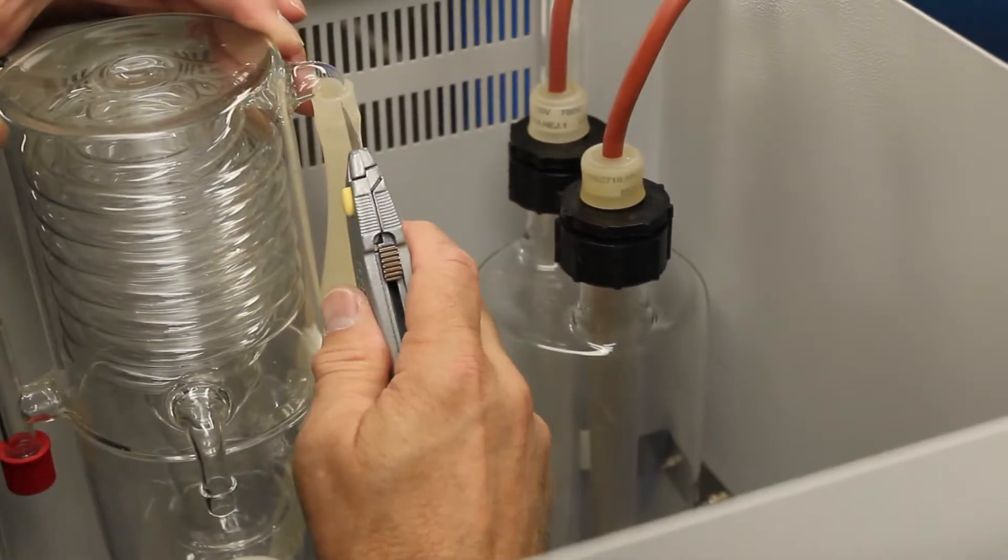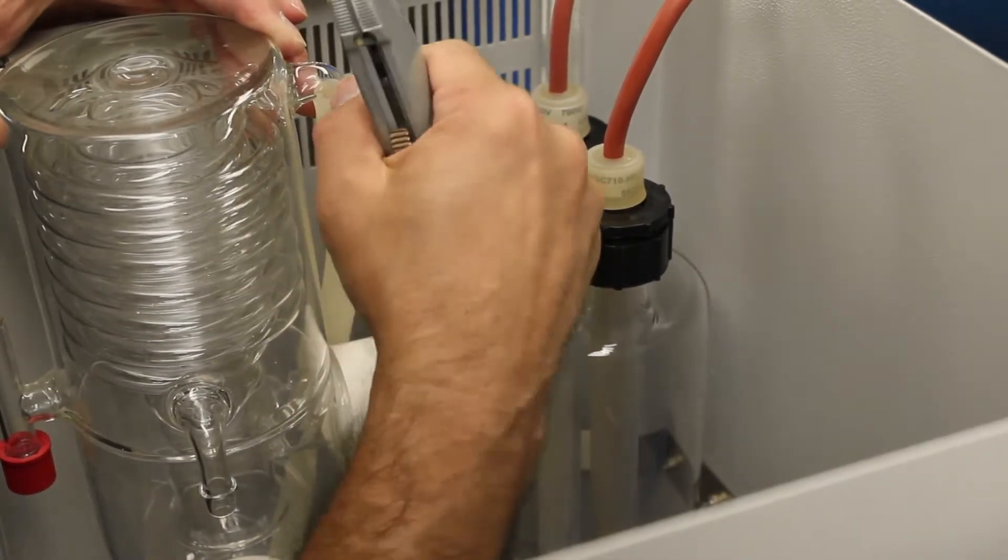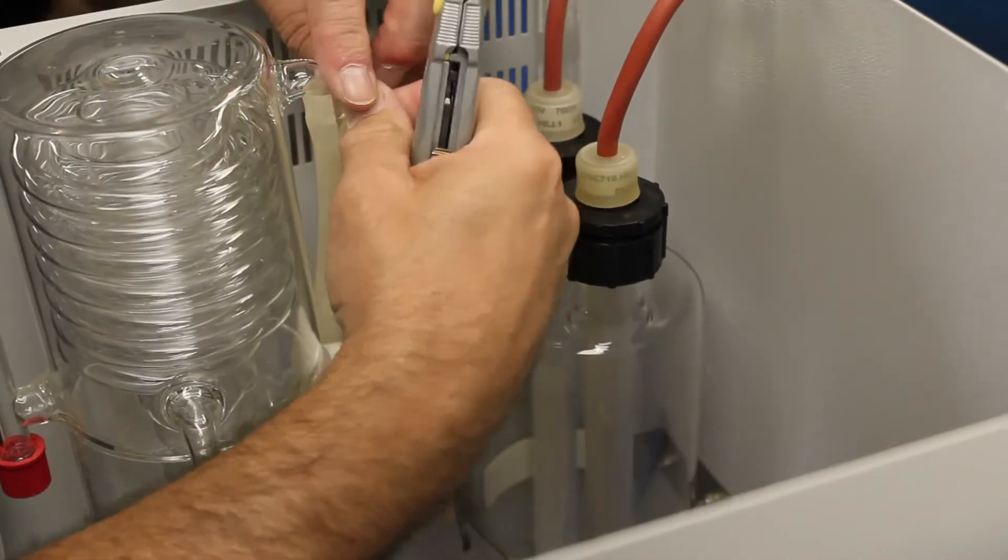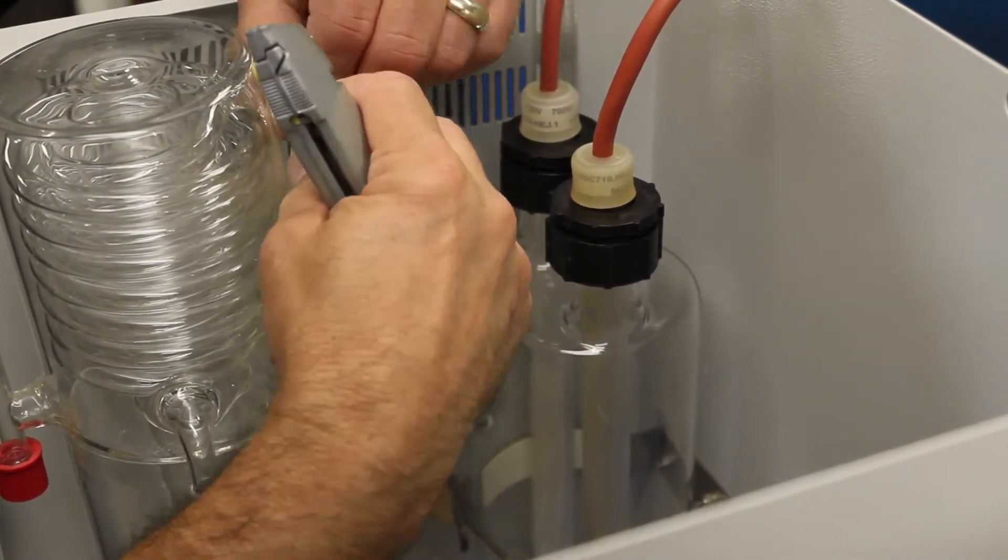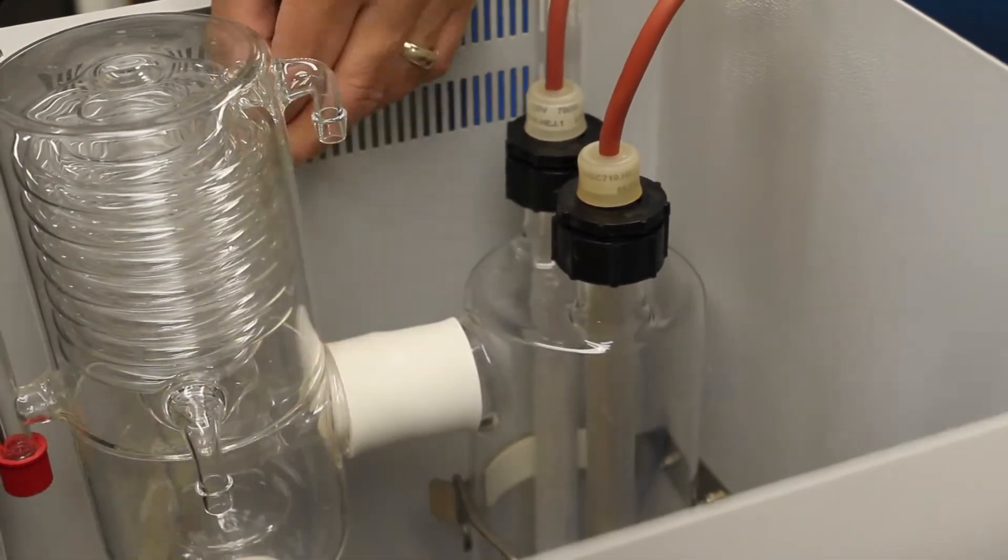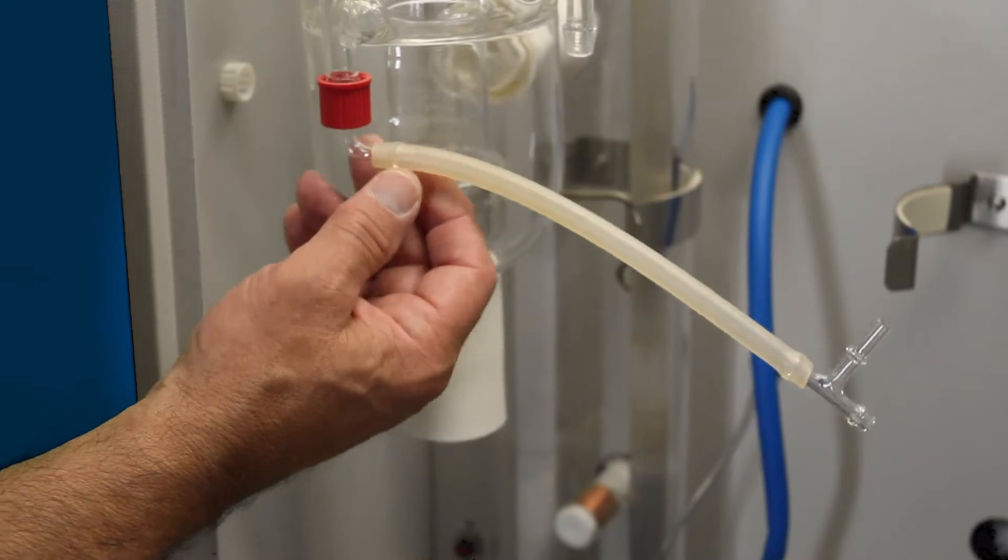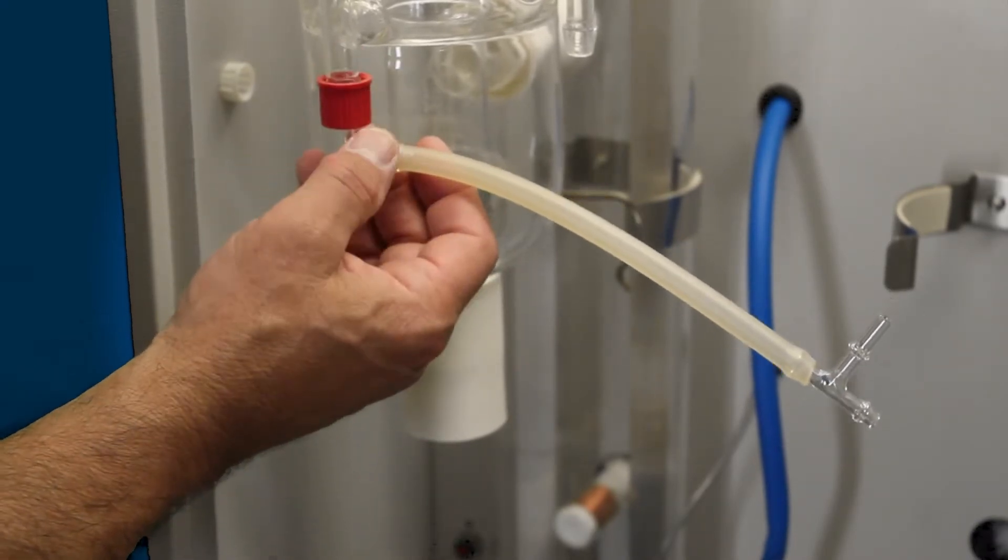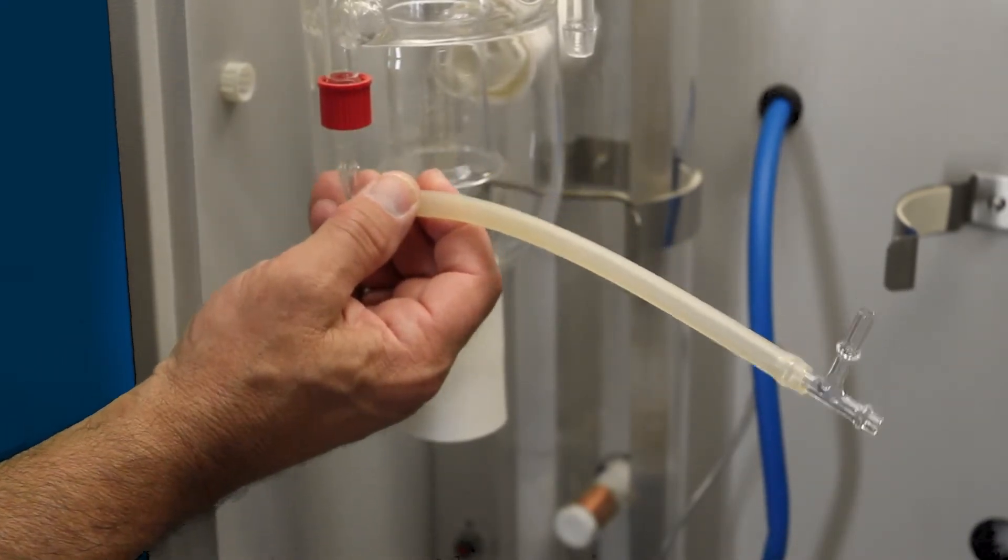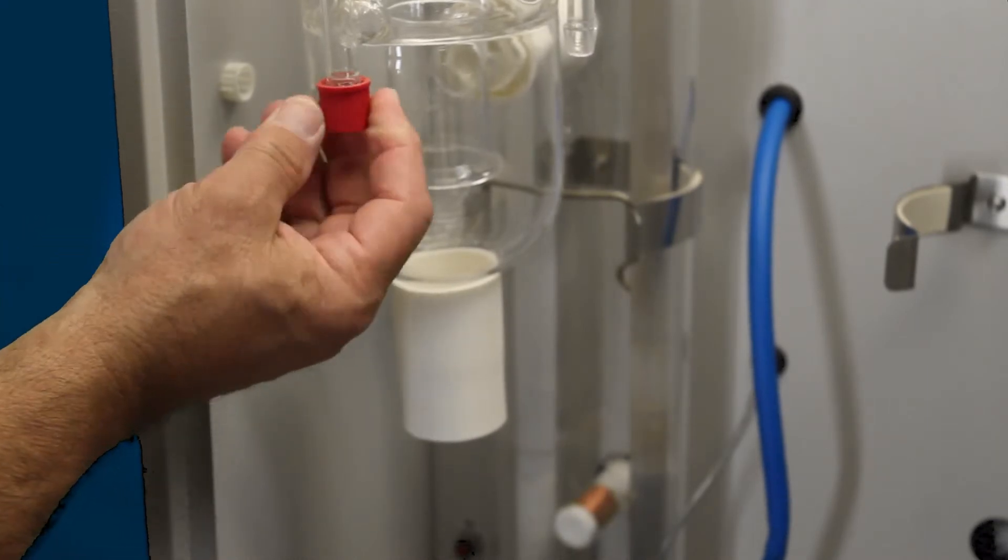And simply slice straight down, peel the tubing around, and that'll pull the tube right off. The next item we're going to remove is the distillate elbow. This is where distillate water comes out. Slide that down. Remove the red cap.